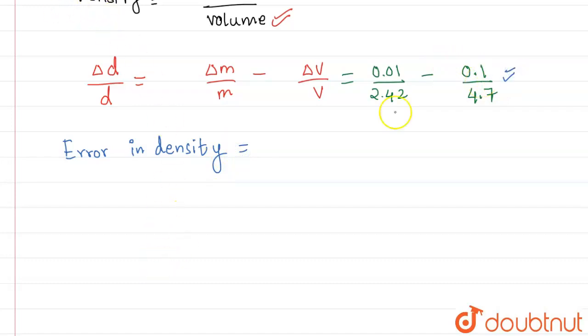So this will eventually come out to be 0.017 grams per centimeter cube. So basically this is the maximum possible error. So basically if you see, this is only our final answer. Thank you.